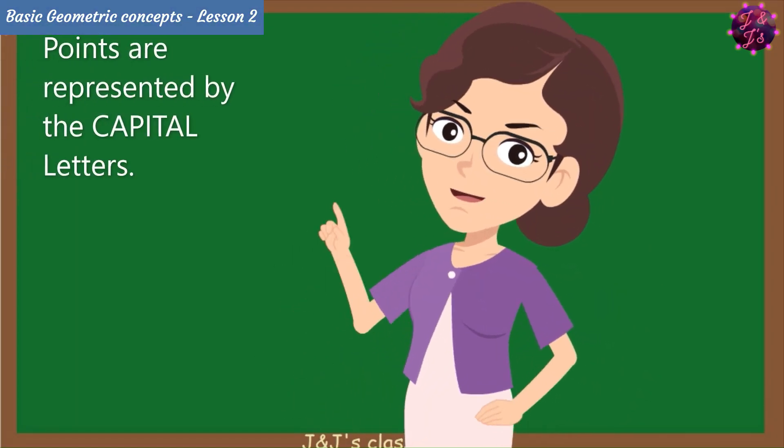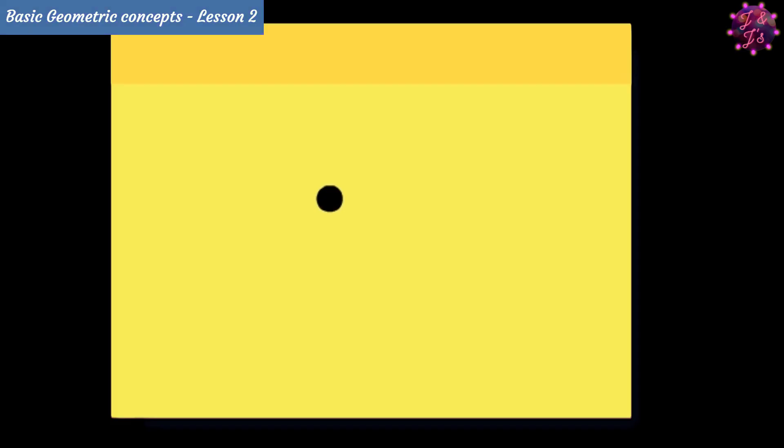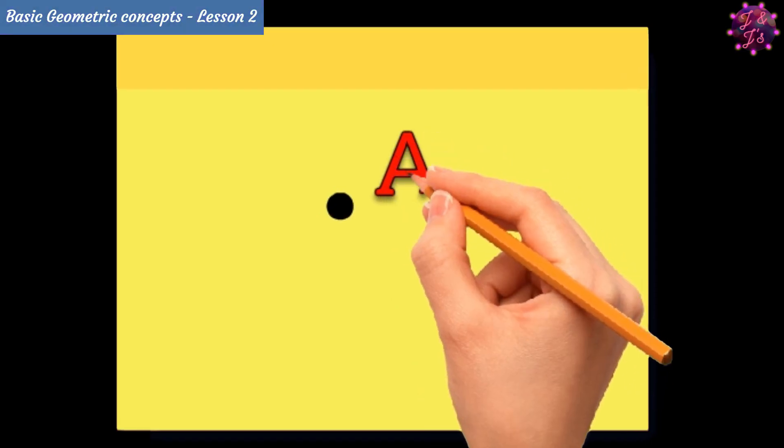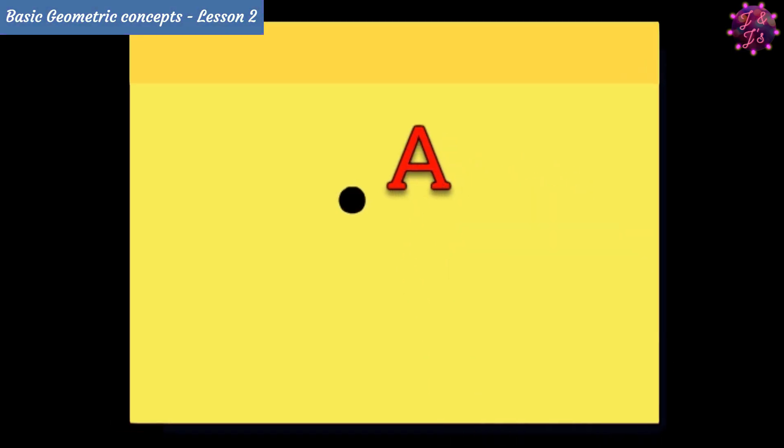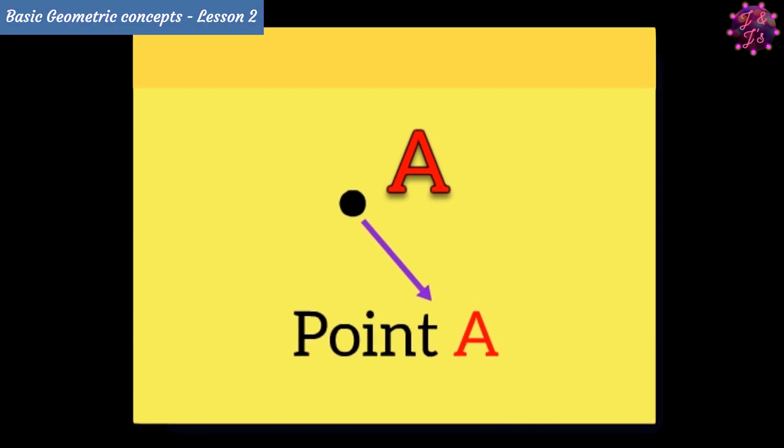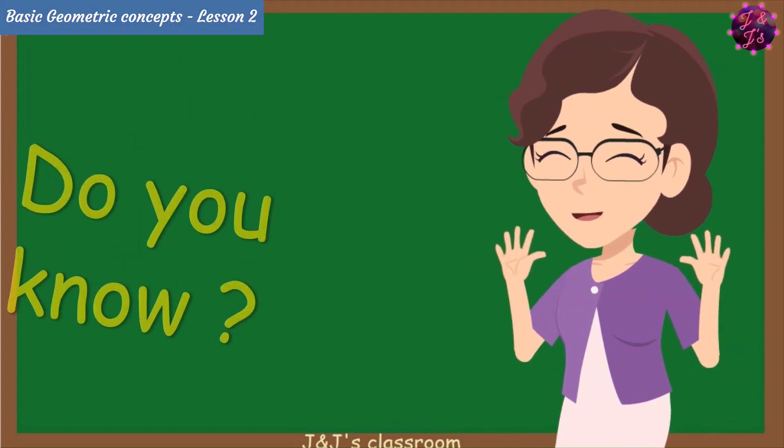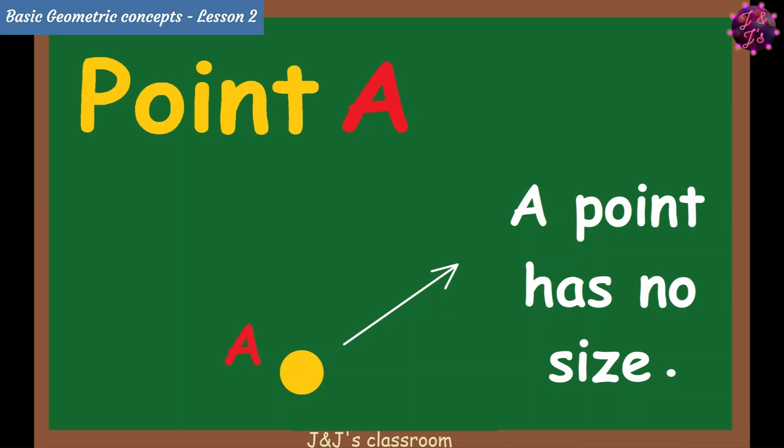Actually, points are represented by capital letters. So let's write capital A near the point what you did. Now this dot is called as point A. And, do you know guys? A point has no size.